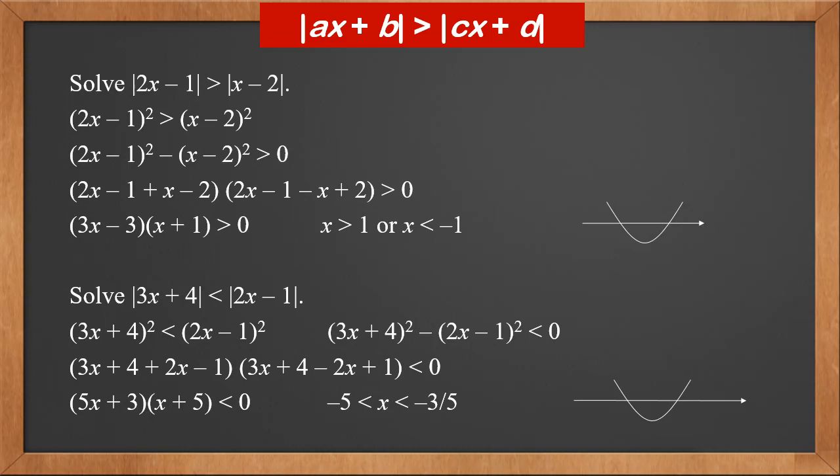It is a quadratic inequality. We solve it by sketching. The quadratic term is 5X squared, so the parabola opens upwards. Therefore, the answer is X between minus 5 and minus 3 over 5.